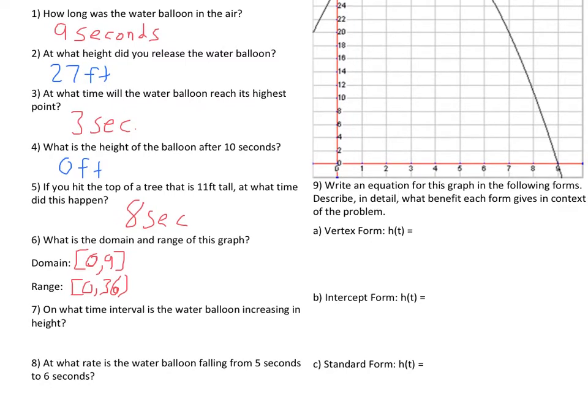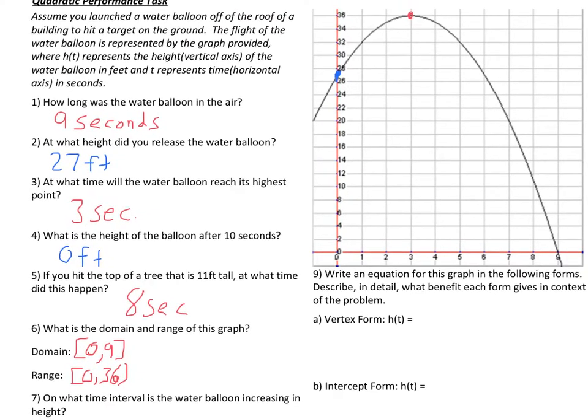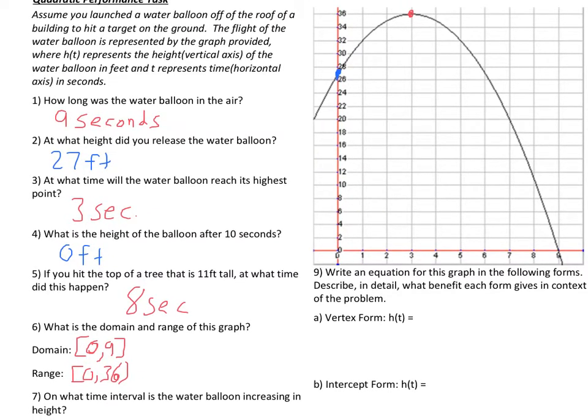It says, on what time interval is the water balloon increasing in height? And it also says, at what rate is the water balloon falling from 5 seconds to 6 seconds? So let's take a look at this. Let's go back to the graph. So where is it decreasing or meaning falling? So aren't we falling from 3 to 9 seconds? Okay. So we're decreasing from 3 to 9 seconds.